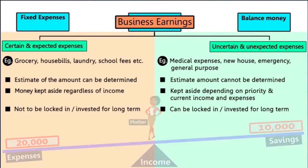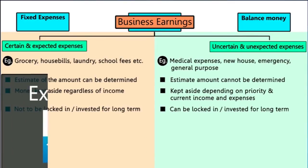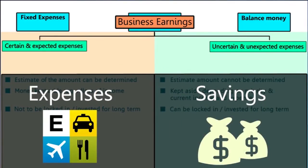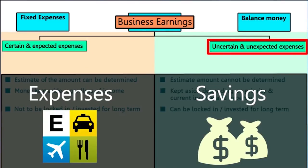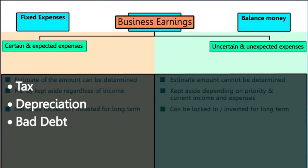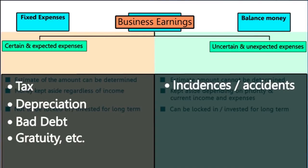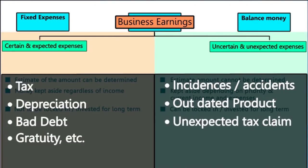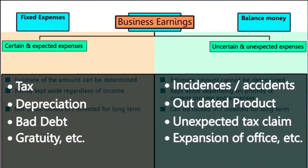Similarly, even businesses have to manage their budget, their expenses and savings. They too have some expected and unexpected expenses or losses — like tax, depreciation, bad debt which is certain, or employee retirement fund like gratuity. While in the future there can be any incidences or accidents, some product may go outdated, unexpected tax claims, or the company may want to expand its office.